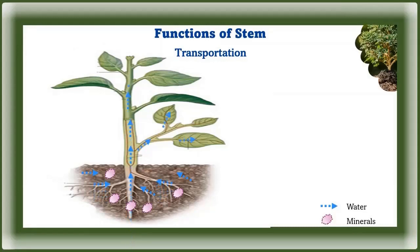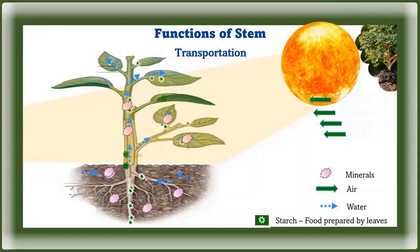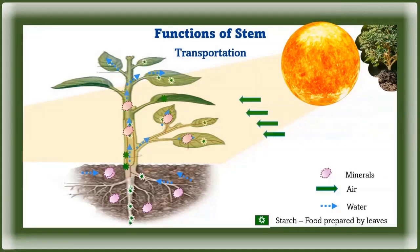Functions of stem — Transportation: the main function of the stem is to conduct water and minerals absorbed by the root to all parts of the plant. In leaves, these water and minerals are converted into a usable product called starch by the process of photosynthesis. The stem then transports the prepared starch from the leaf to other parts of the plant.